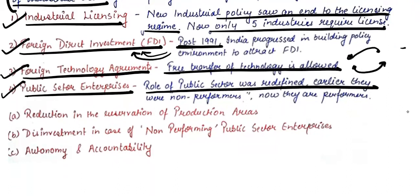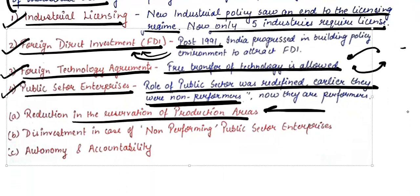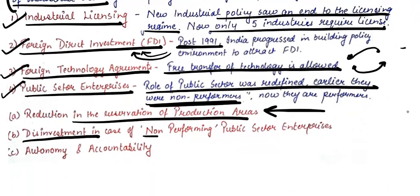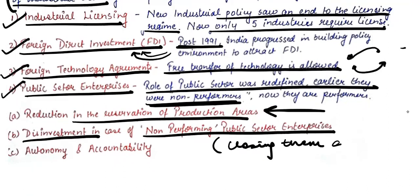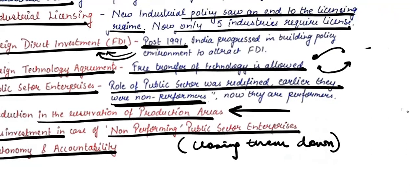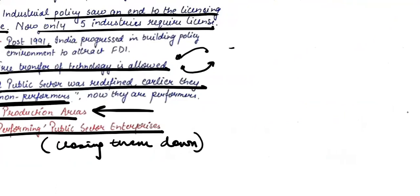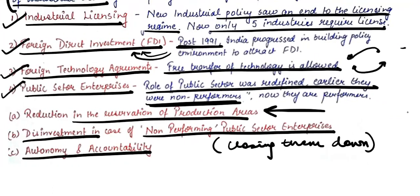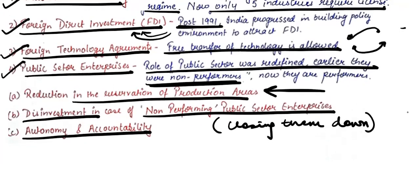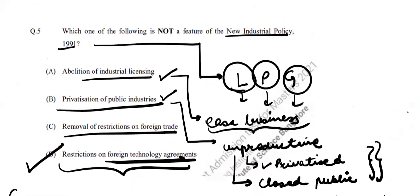Fourth, public sector enterprises — the role of the public sector was redefined. Non-performers were either closed or transferred to the private sector. This included reduction in the areas reserved for the public sector, with many given to private players. Non-performing public sector enterprises were disinvested or closed down. Additionally, autonomy and accountability were introduced — public sector units were made accountable for their actions rather than being given unconditional freedom.